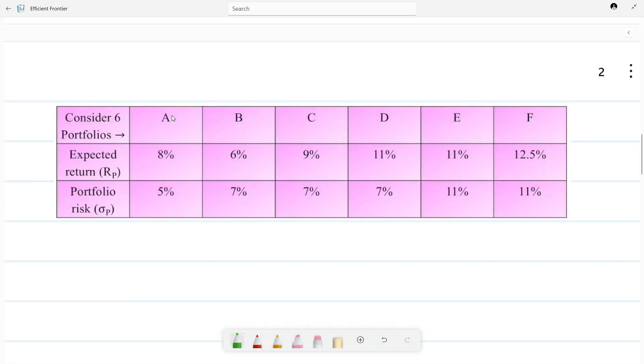Suppose there are six portfolios. Portfolio A is giving you an expected return of 8% while risk associated is 5%. If we see B, risk has increased and return has decreased, so certainly we won't be investing in this portfolio.